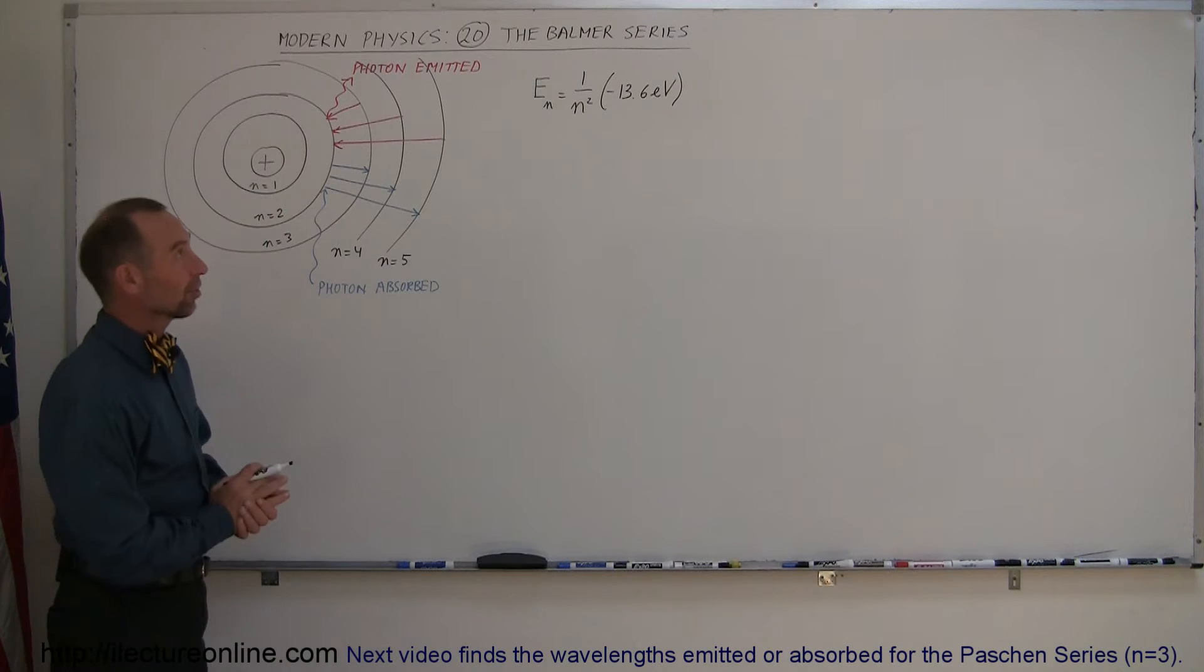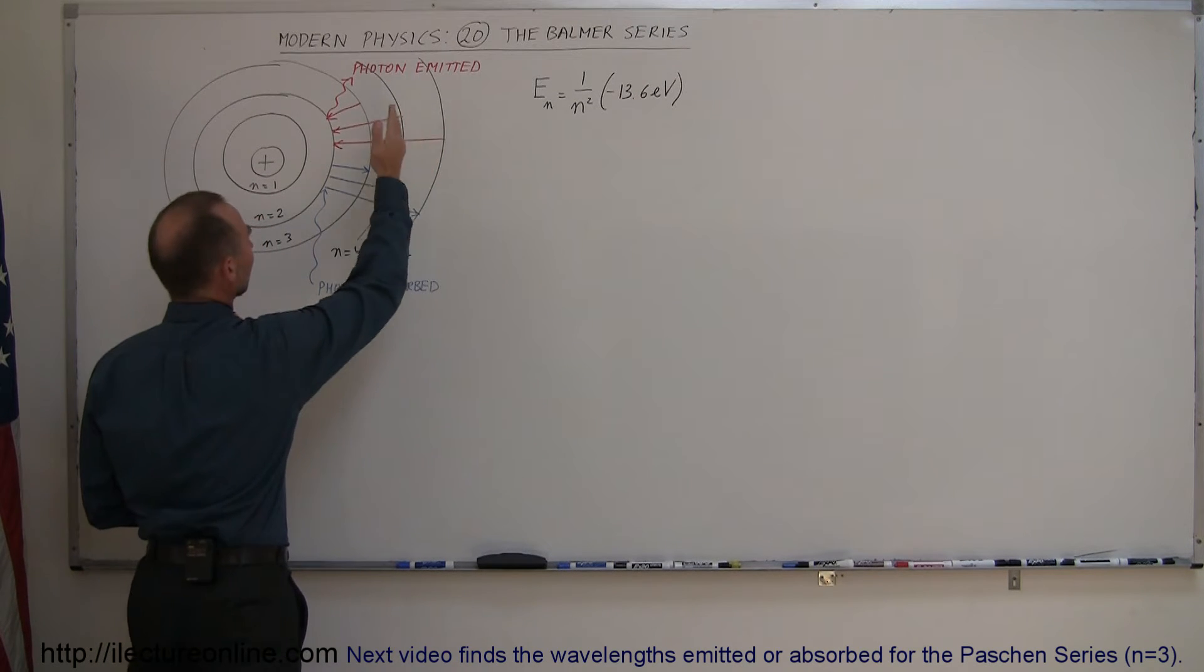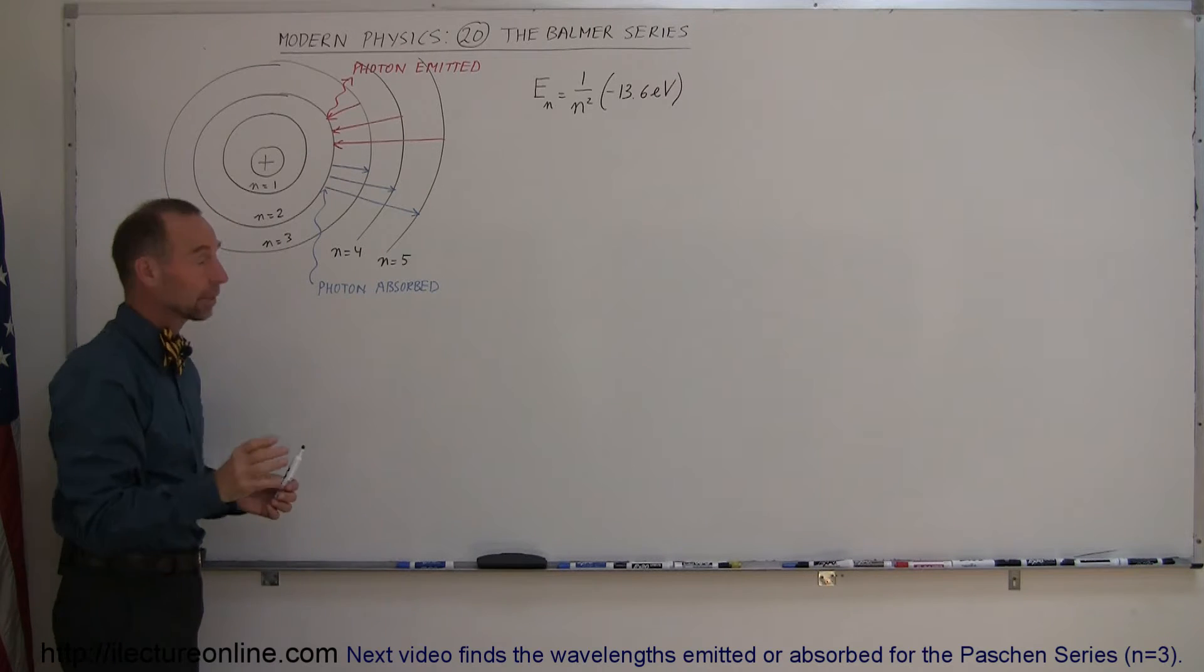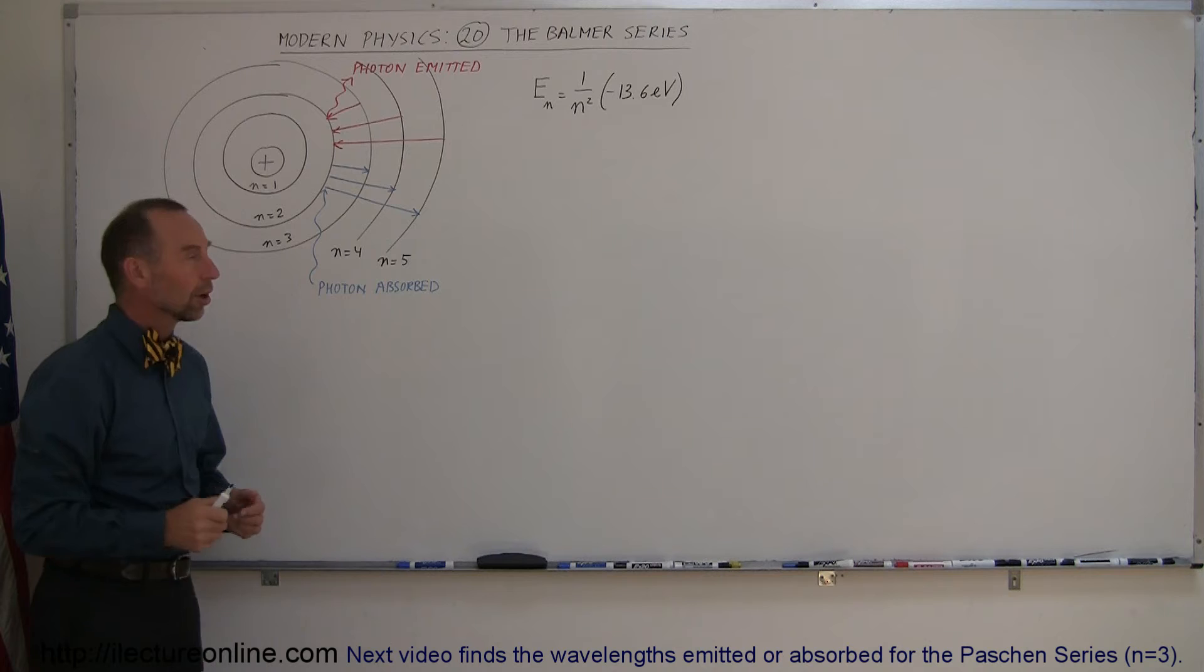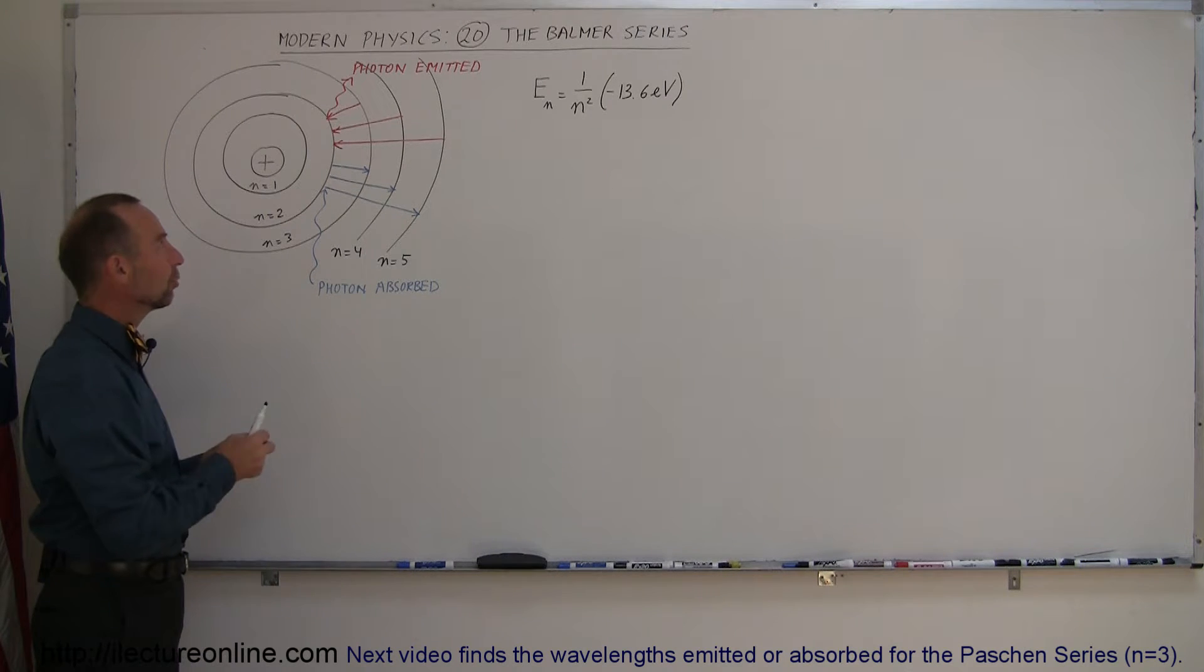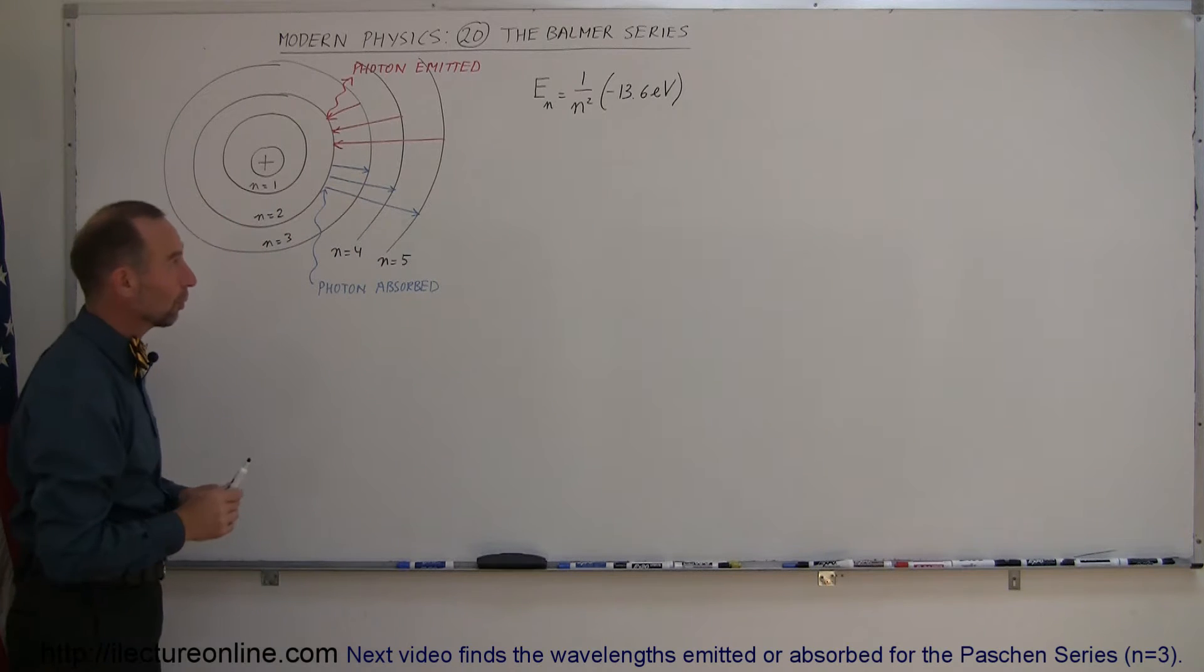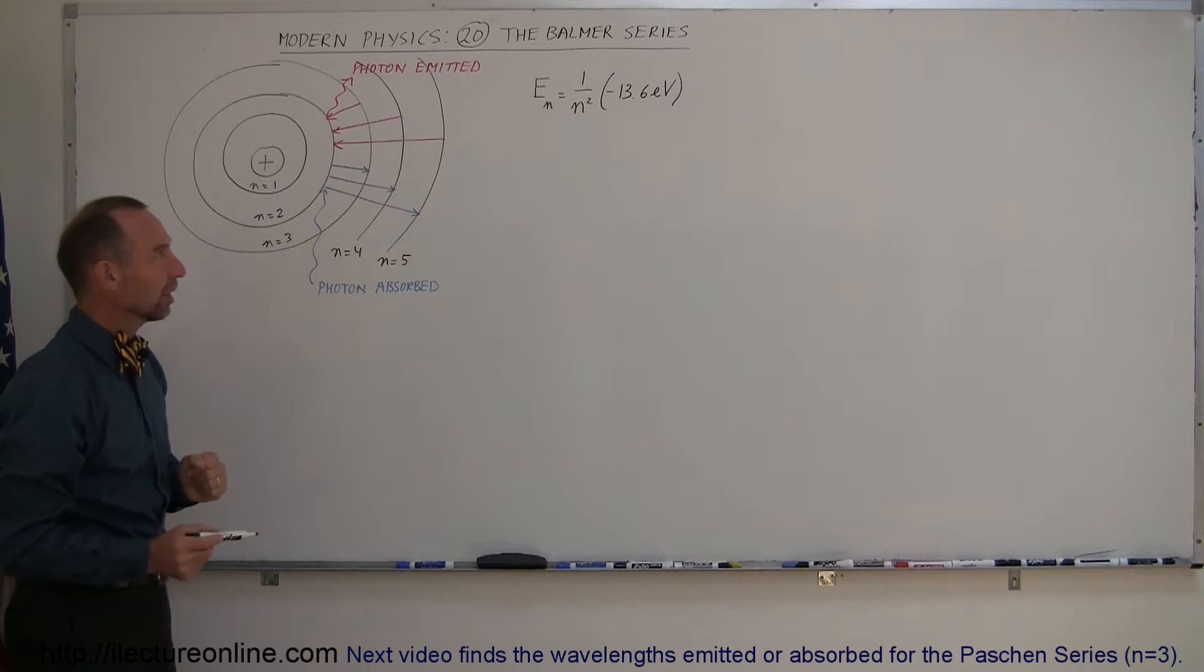And now let's talk about the Balmer series. The Balmer series of jumps in the hydrogen atom are those electron jumps that come from higher orbits all the way down to the second orbit. They stop there, they don't go down to the first orbit, or any electron jumps from the second orbit onto higher orbits.